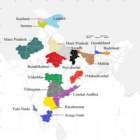A union territory was designated around Chandigarh, the shared capital of Punjab and Haryana. Statehood was conferred upon Himachal Pradesh on 25 January 1971, and to Manipur, Meghalaya and Tripura on 21 January 1972. The Kingdom of Sikkim joined the Indian Union as a state on 26 April 1975. In 1987, Arunachal Pradesh and Mizoram became states on 20 February, followed by Goa on 30 May of the same year.